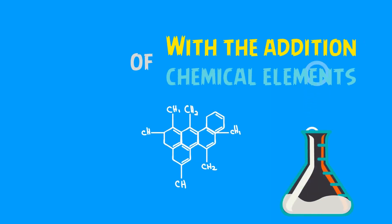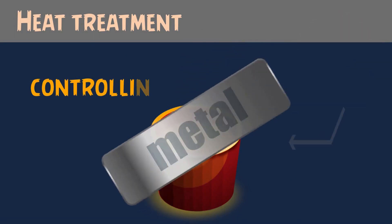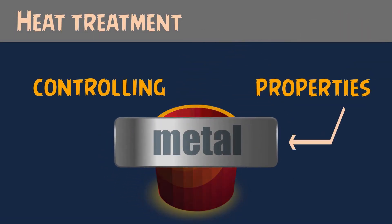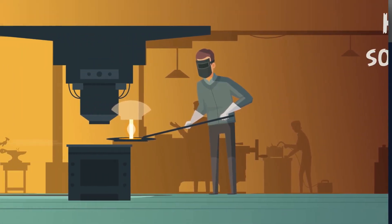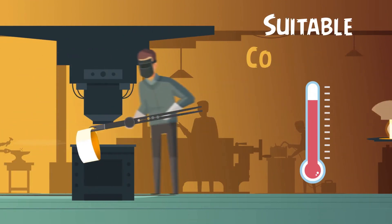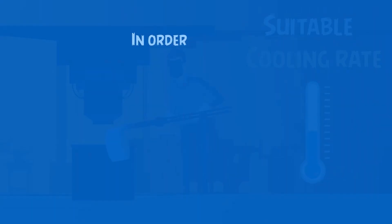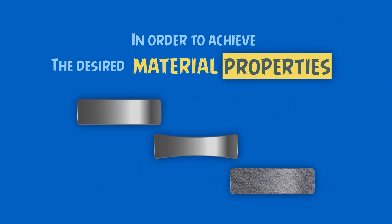Along with the addition of chemical elements, heat treatment is probably the most important process in controlling the properties of metal. It involves heating solid metal to a defined temperature followed by a suitable cooling rate in order to achieve the desired material properties.